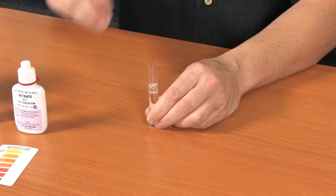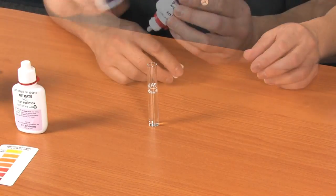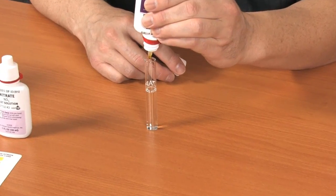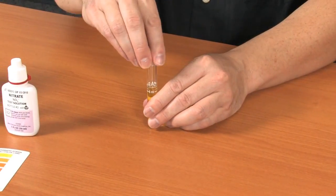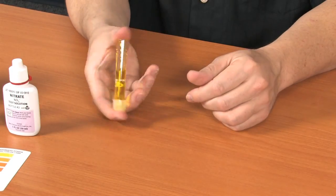Add 10 drops from bottle number one to the test tube. Be sure to hold the bottle in an upright position. Cap and shake the test tube to mix the solution.